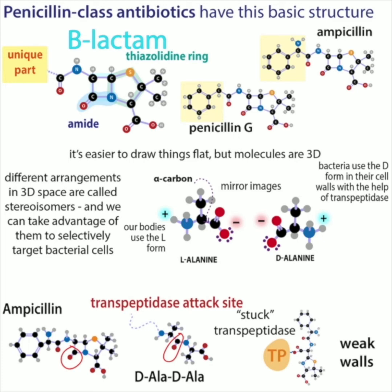The thing with beta-lactams — other antibiotics like penicillin and ampicillin are in this class — is that they look kind of like that beta-lactam end of the peptidoglycan chain. So the transpeptidase will go to attack it, but it'll get stuck on it. Normally, the transpeptidase attacks one peptide chain, gets stuck, then the second peptide chain attacks that first chain and kicks off the transpeptidase. But with a beta-lactam, the transpeptidase attacks the antibiotic and gets stuck, and nothing can happen. So the bacteria can't form its walls.